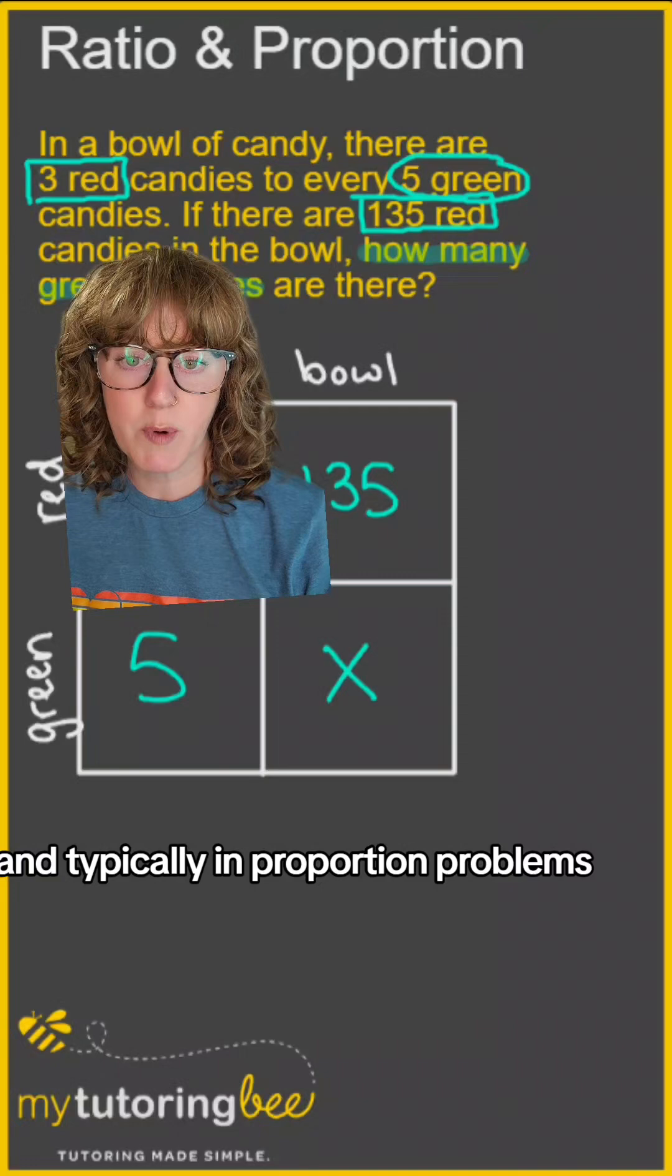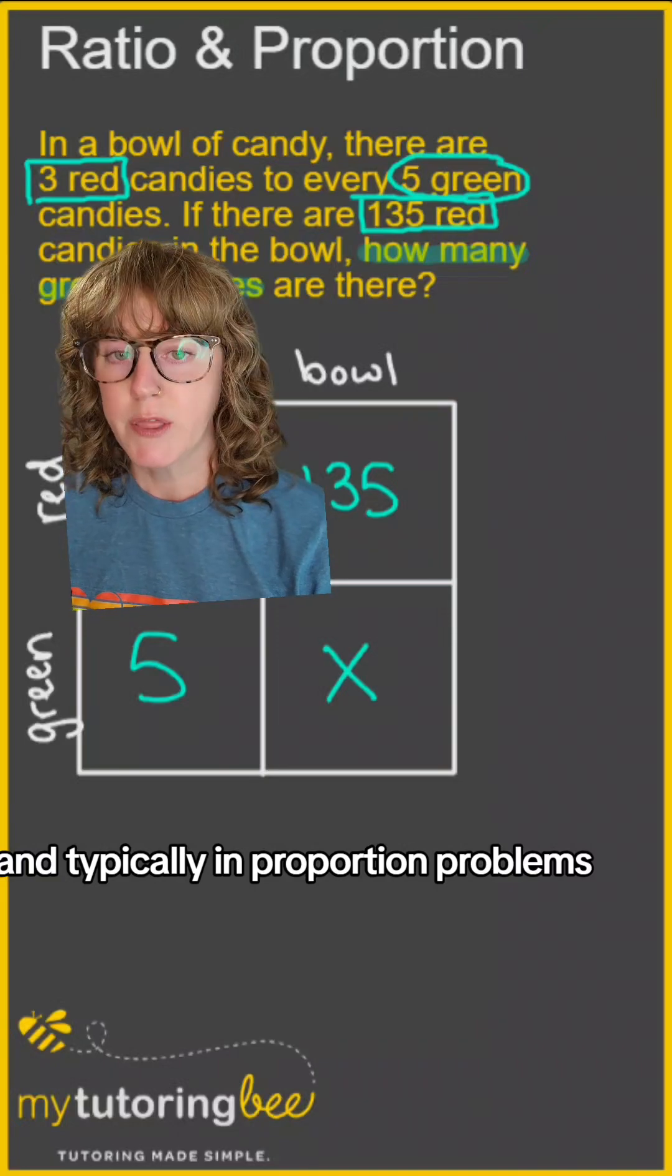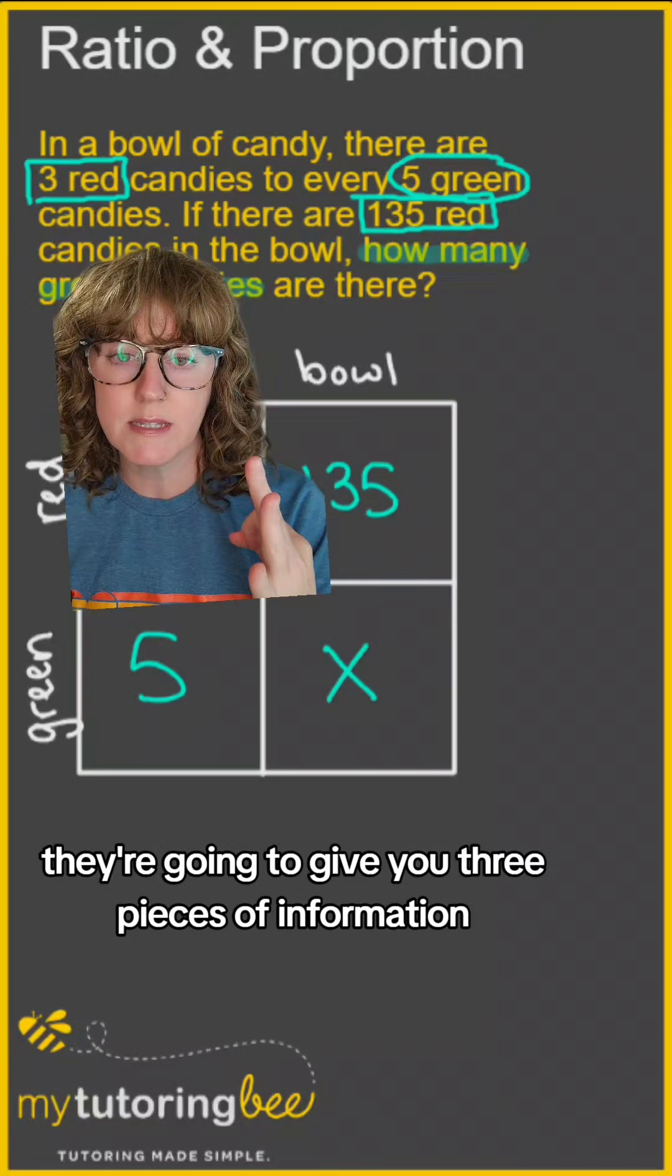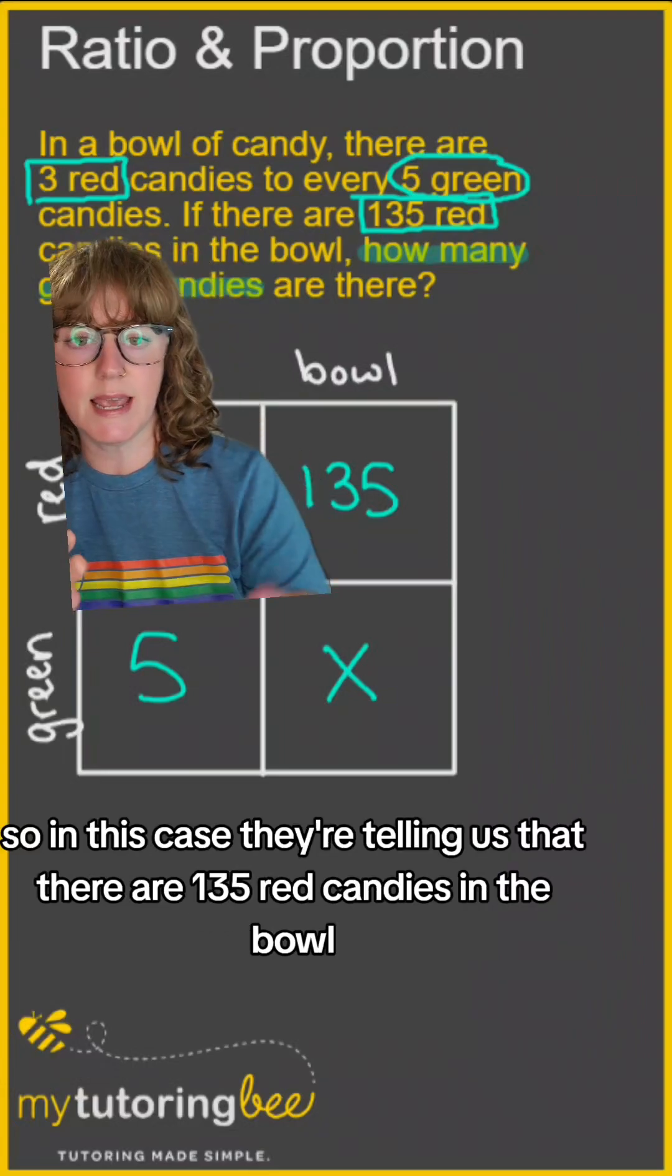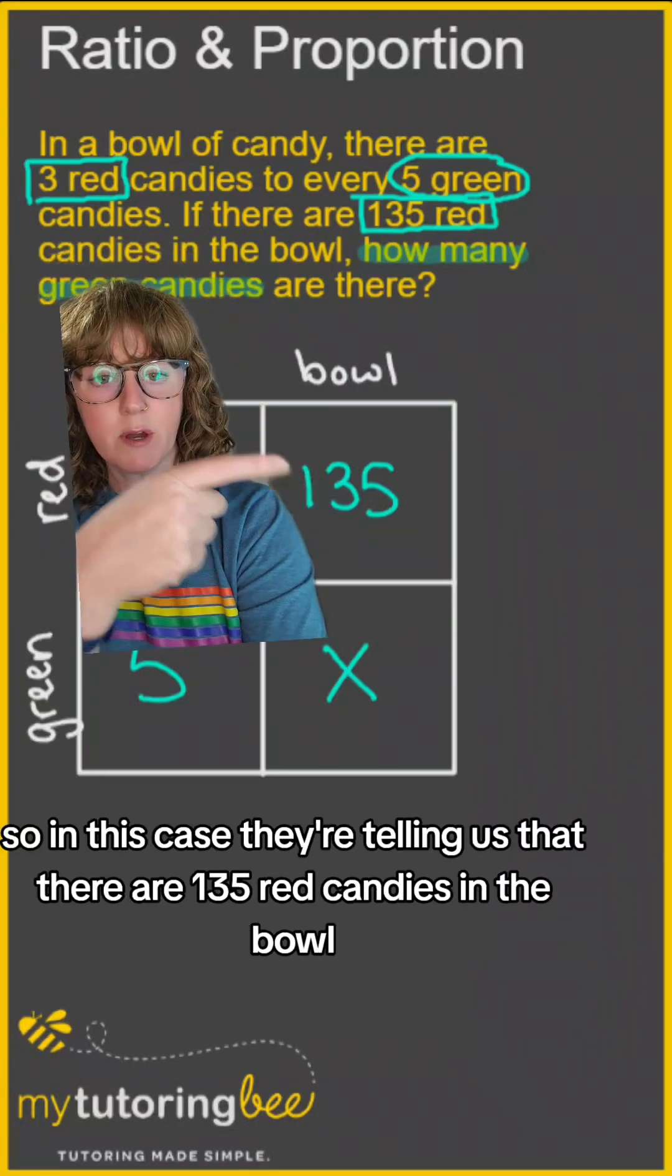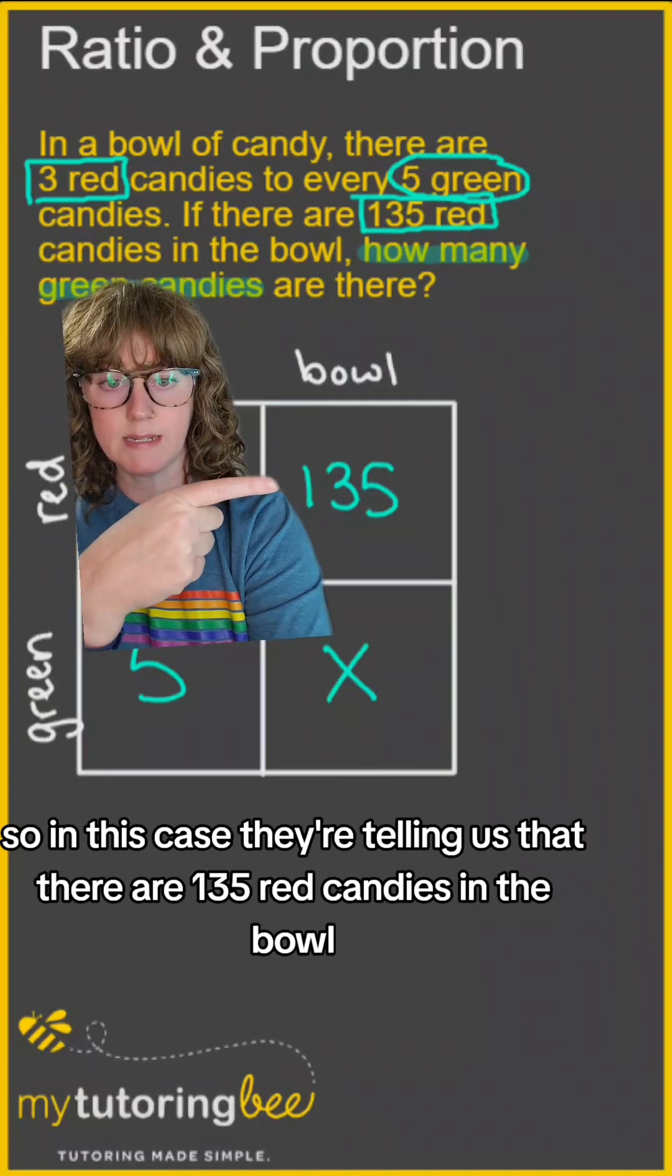And typically in proportion problems, they're going to give you three pieces of information, and then you have to figure out that fourth piece. So in this case, they're telling us that there are 135 red candies in the bowl.